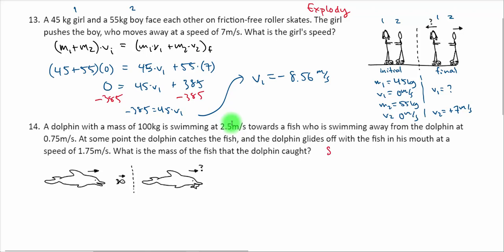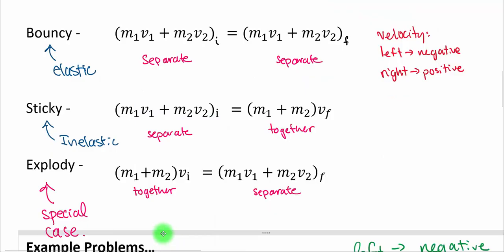If I'm reading this correctly, they're separate in the beginning and together in the end. By the way, amazing dolphin drawing if I do say so myself. So they're together in the end. That's going to be a sticky interaction. So one thing catches the other. That means for the formula we're going to use M1V1 plus M2V2 initially because they're separate in the beginning.